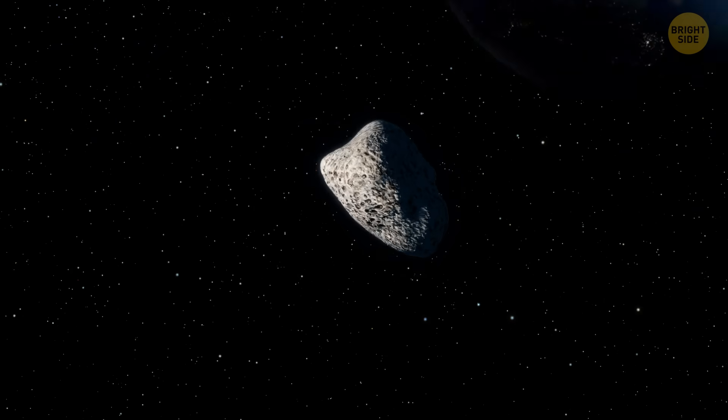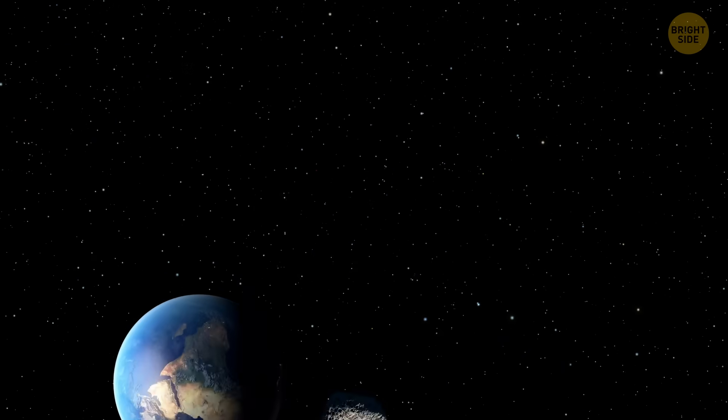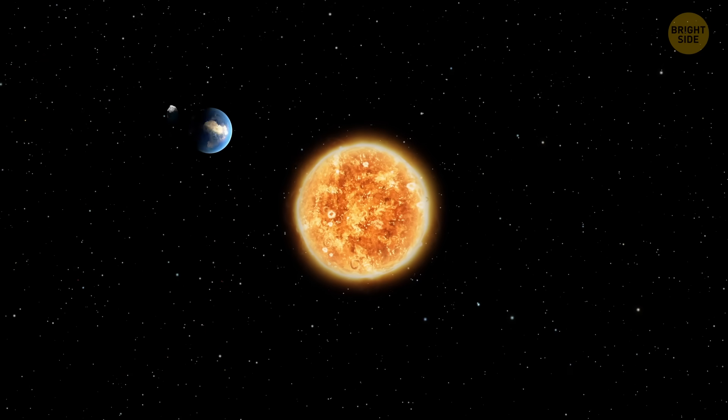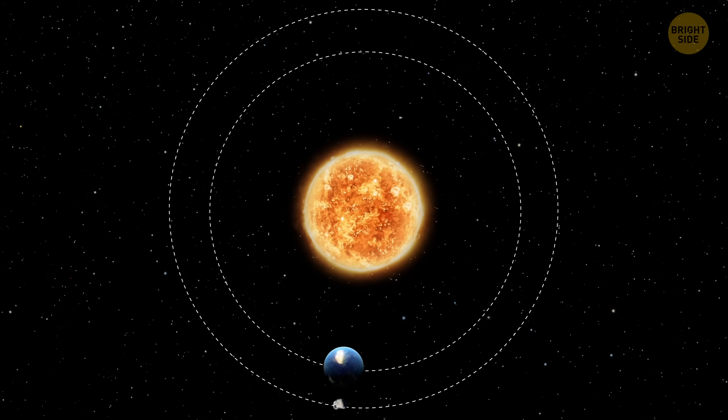So how do these quasi-moons pull off their cosmic balancing act? That's because it's just an orbital illusion. Remember, PN7, like other quasi-moons, isn't actually circling our planet.